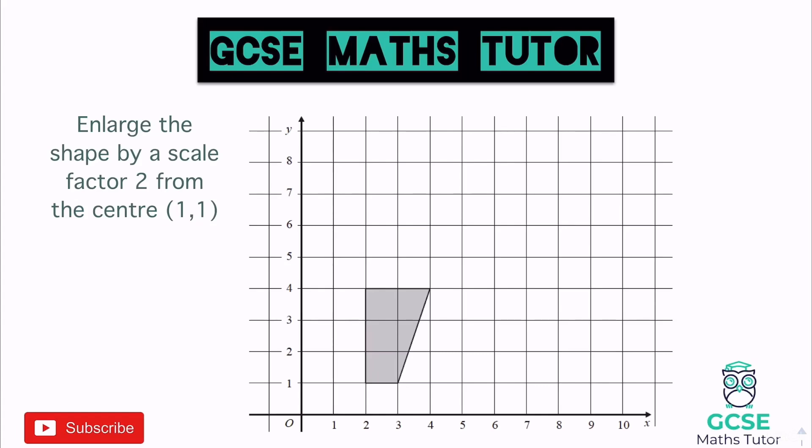We're going to kick off with this question: enlarge the shape by a scale factor of two from the center (1,1). We need to identify that coordinate first — across one, up one gives us our center of enlargement. I almost imagine this like a torch projecting the image we can see on the grid.